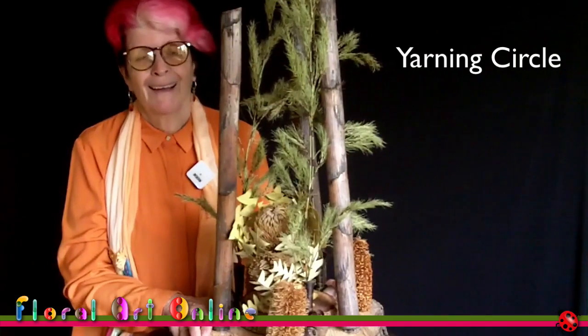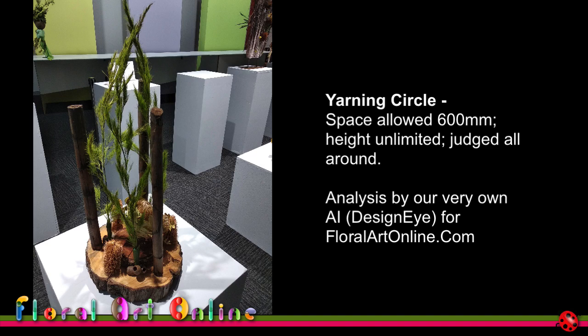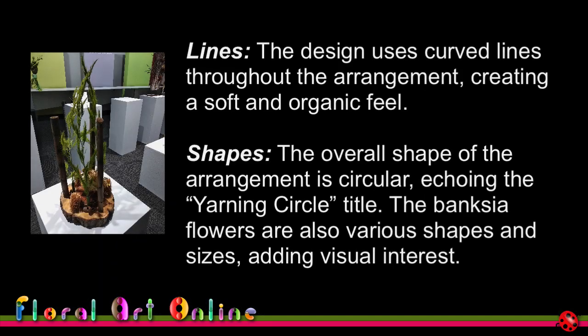Let's see what DesignEye has to say. Here is my design for Yarning Circle. The space allowed is on a plinth that's 600mm square — that is the size allowed for width and depth, height is unlimited, and it is judged all around. First, in terms of lines and shapes: the design uses curved lines throughout the arrangement, creating a soft and organic feel. It's interesting that the three Gymea lily stalks are quite dominant, but the overall effect reads as curved lines because of the circular base, the circular banksias, the circular gum nuts, and the koala fern with its fluid, curved movement.